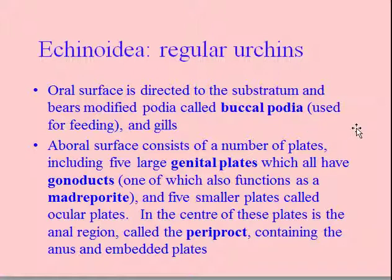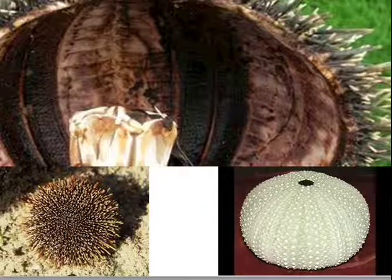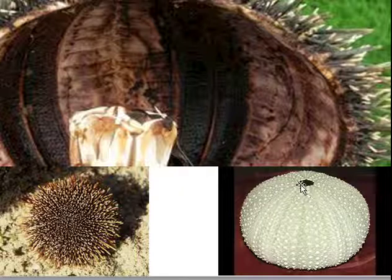The oral surface is directed toward the substratum — the mouth faces the ground. They have modified tube feet called buccal podia used for feeding, as well as gills and plates. The genital plates, gonaducts, madreporite, and periproct are structures on the aboral surface, but unfortunately you generally can't see these with the naked eye because they're either covered in spines and epidermis, or they've eroded away — they're not fused to the rest of the test once the living tissue is gone.